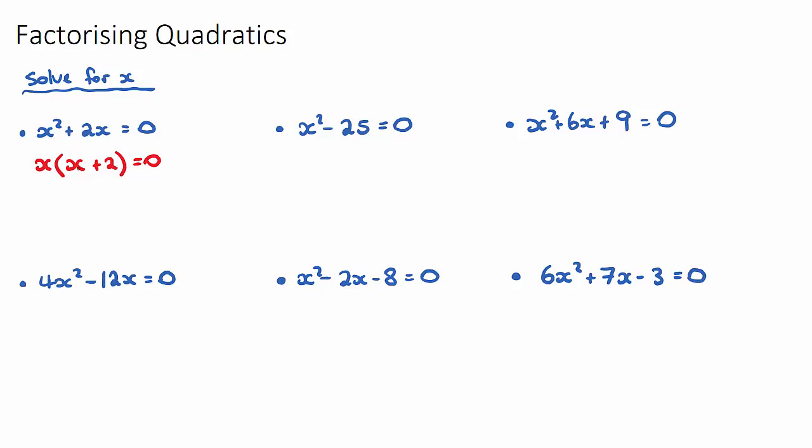Now from this step here, now we have something multiplied by something is equal to 0. And now it's in a factorized format, we can use the null factor law. The null factor law helps us solve a quadratic and the null factor law says that if a times b is equal to 0, so something times something is equal to 0, either a can be 0 or b can be 0. This is the null factor law. So from this step here, we can say that x can be 0 or x plus 2 can be 0. So therefore, this is one answer for x and x is equal to negative 2 is the other solution for x.